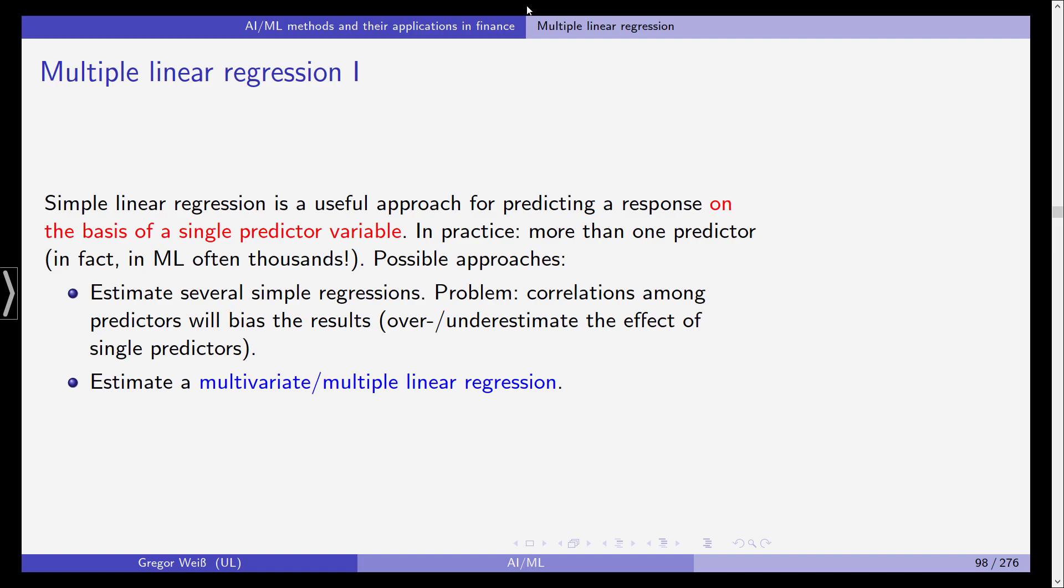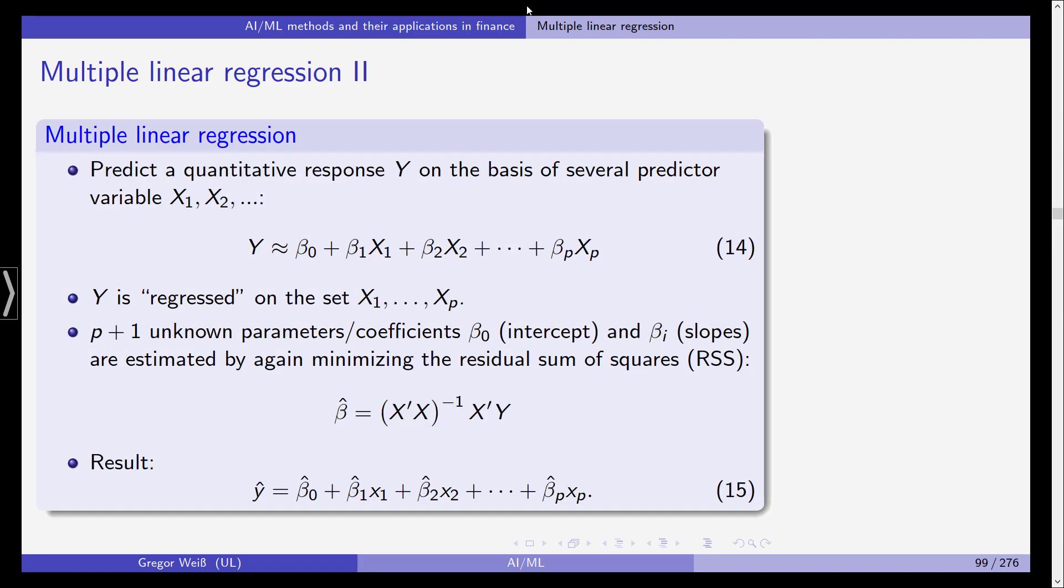That is, we include more than one predictor variable. So we have our response, which in this case is a metric response, Y, and we want to predict Y on the basis of several predictors: X1, X2, X3, and so on until Xp. So we have p variables, thus we have p plus 1 parameters: beta 1, beta 2, beta 3, up until beta p for the predictors and beta 0 for the intercept. We say that Y is regressed on the set of predictors X1, X2, and so on.